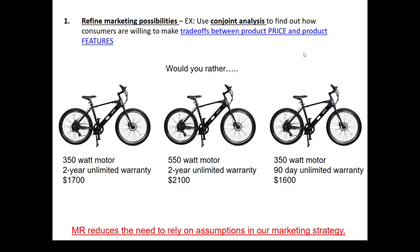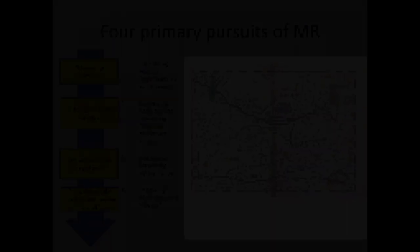Like many other marketing research techniques, conjoint analysis reduces the need to rely on assumptions in our marketing strategy. Assumptions are things we presume to be true despite not having explicit empirical evidence. In marketing we always have to make some assumptions — some things will never be known for certain and we can't research everything — but for those high-stakes assumptions, those things that if we're wrong could have cataclysmic results, marketing research is often very valuable.